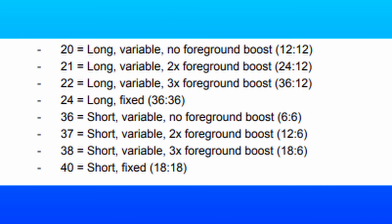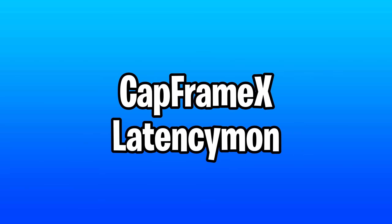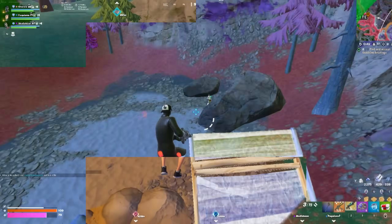The default setting for priority separation would be 38. We'll be doing practically every single option: 20, 21, 22, 24, 36, 37, 38, 40, and 42. As always, we use LatencyMon and CapFrameX for benchmarking. Let's get into it.